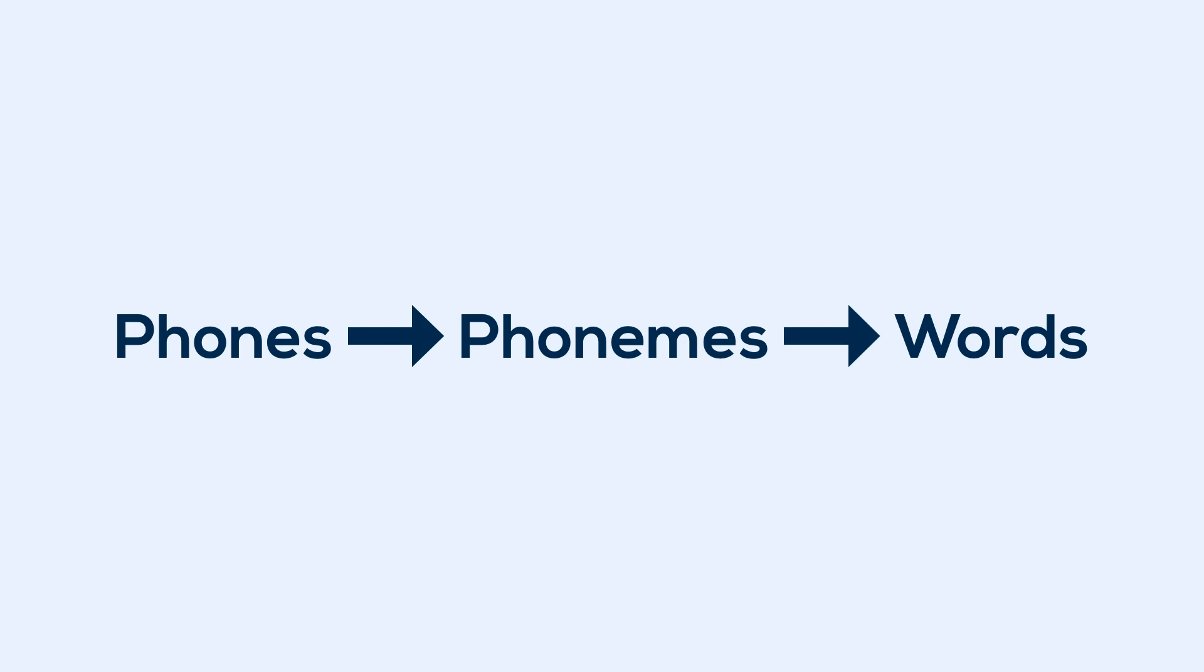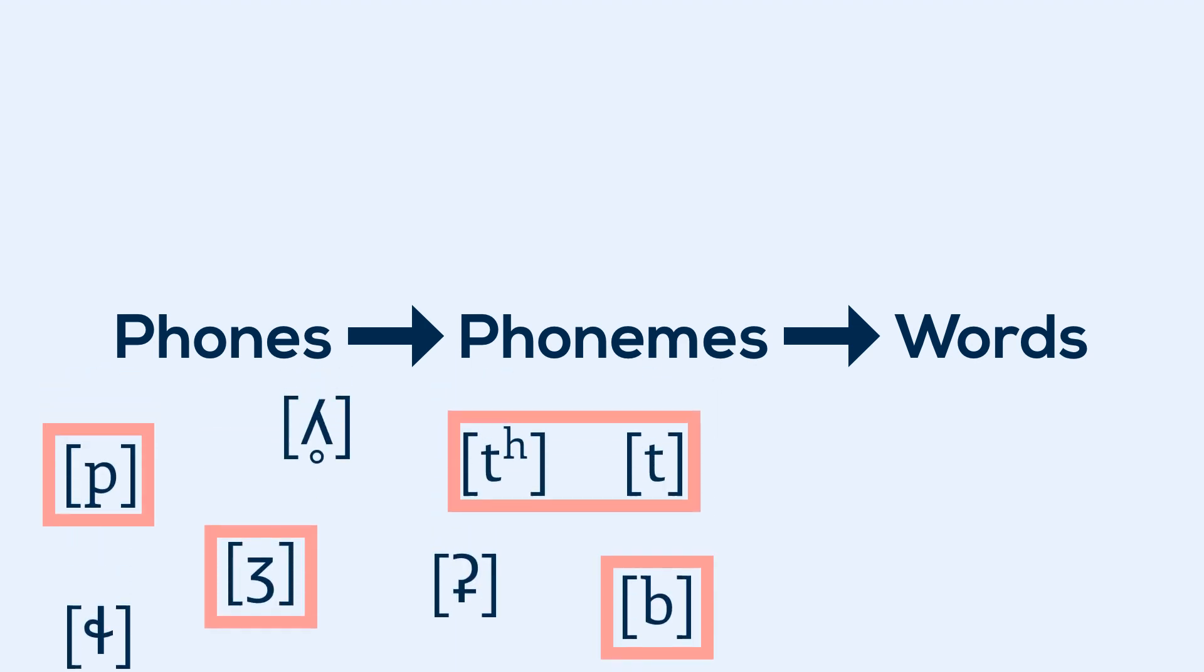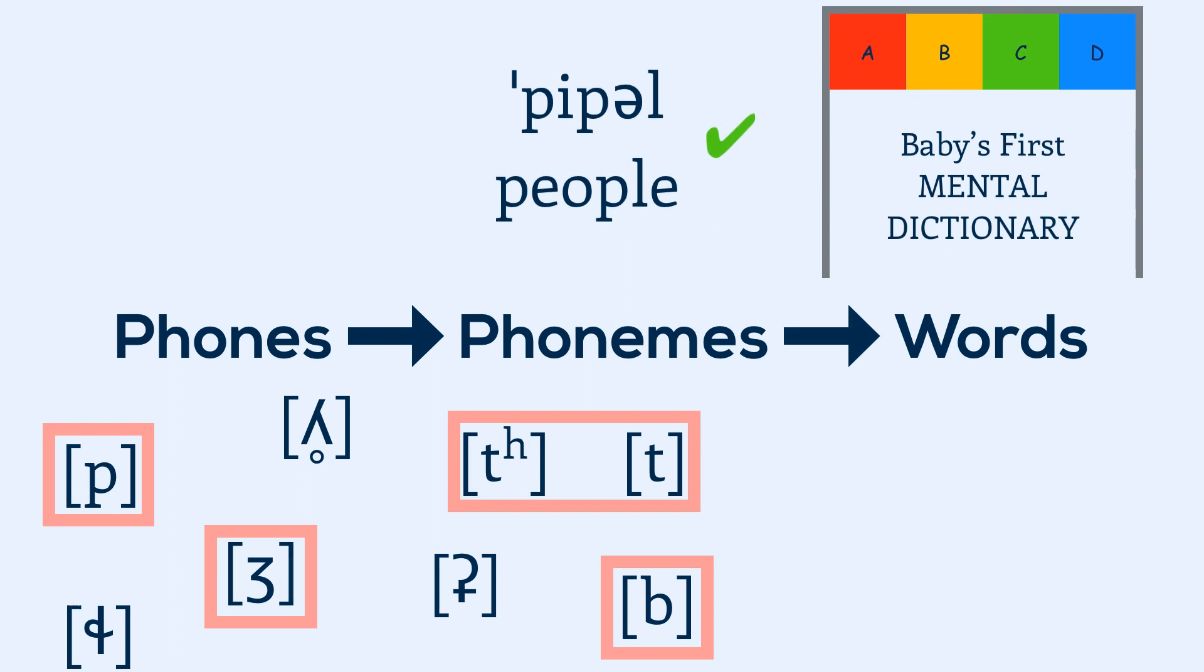And perhaps the most fascinating part is that these steps, from picking up phonemes to learning words, happens automatically. It's easy to take this all for granted, but the underlying processes that work in the child's brain are, simply put, remarkable.